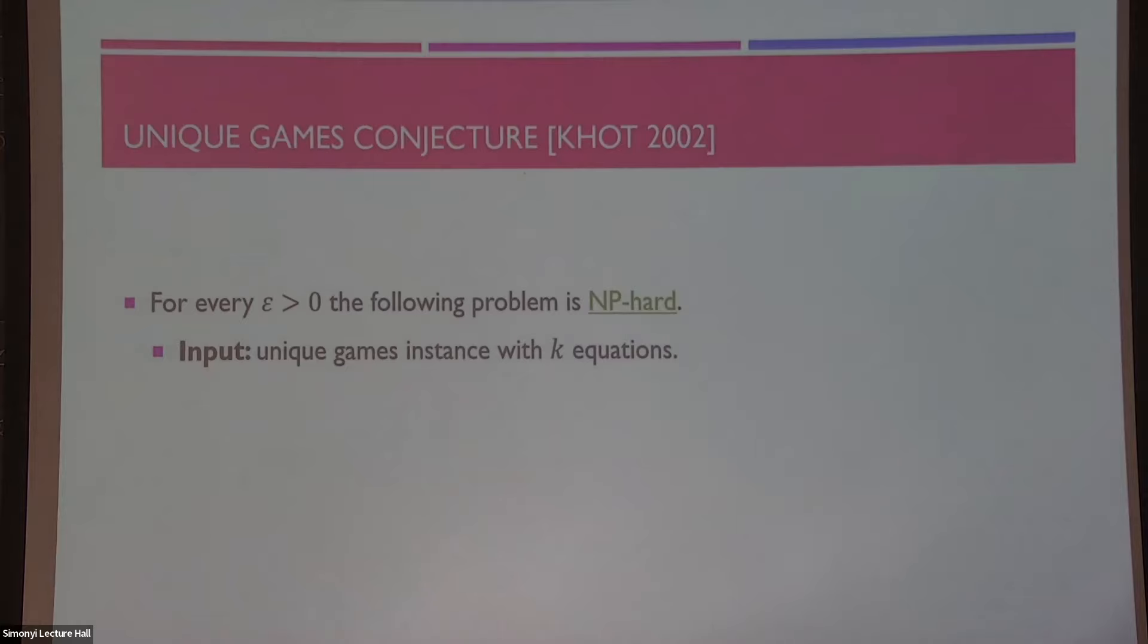And what we want to do is not even output a good assignment. We just want to distinguish between two situations. We want to output yes if there is an assignment that satisfies a one minus epsilon fraction of all the equations. And we want to output no if any assignment that we give on the variables will not satisfy more than an epsilon fraction of the equations. So, think of this epsilon as like 1% or something like that. We really want to distinguish between these two far away cases.